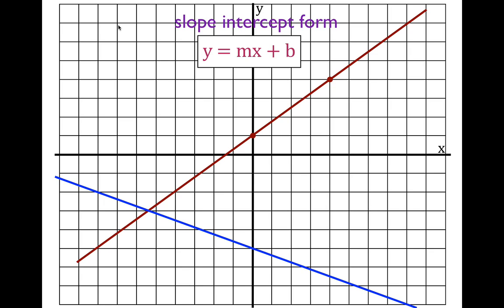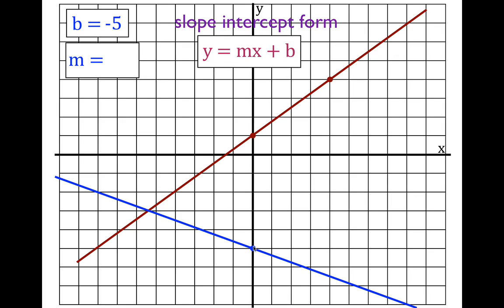The next line — write down b equals, m equals. b is where the line crosses the y-axis, which is at negative five. Now we look for the next place where that line crosses the graph — way down here. We go down three, which is negative three for the rise, and run eight, so the rise over the run is minus three over eight, which we write as minus three-eighths.